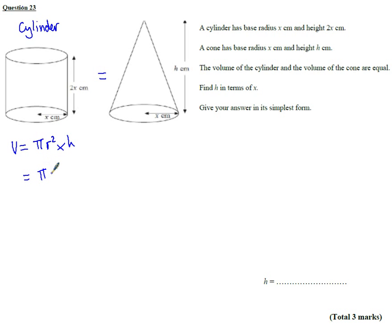x squared is the radius squared times the height which is 2x. So we put all that together, you get 2 pi x cubed. This is straightforward.